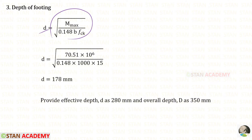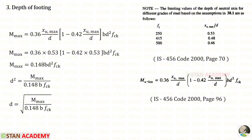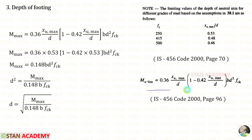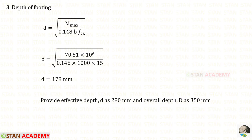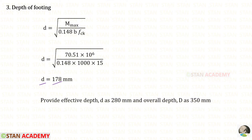Let us see how the effective depth formula is derived. From the IS code book, page 70 and 96, for FY = 250, XU_max/D = 0.53. Substituting this value into the formula, we derive the expression for effective depth. With M_max calculated, B = 1000 mm, and FCK = 15, we get an effective depth of 178 mm. However, since this is a very small value, we will adopt an effective depth D = 280 mm and overall depth = 350 mm.